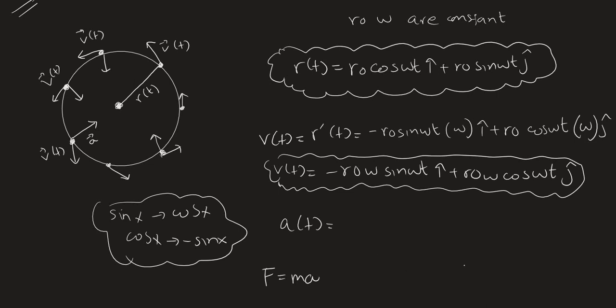Also, since the speed is constant, the tangential acceleration is zero. The velocity and acceleration are perpendicular to each other, so their dot product equals zero. This confirms that the acceleration has no component along the direction of velocity.